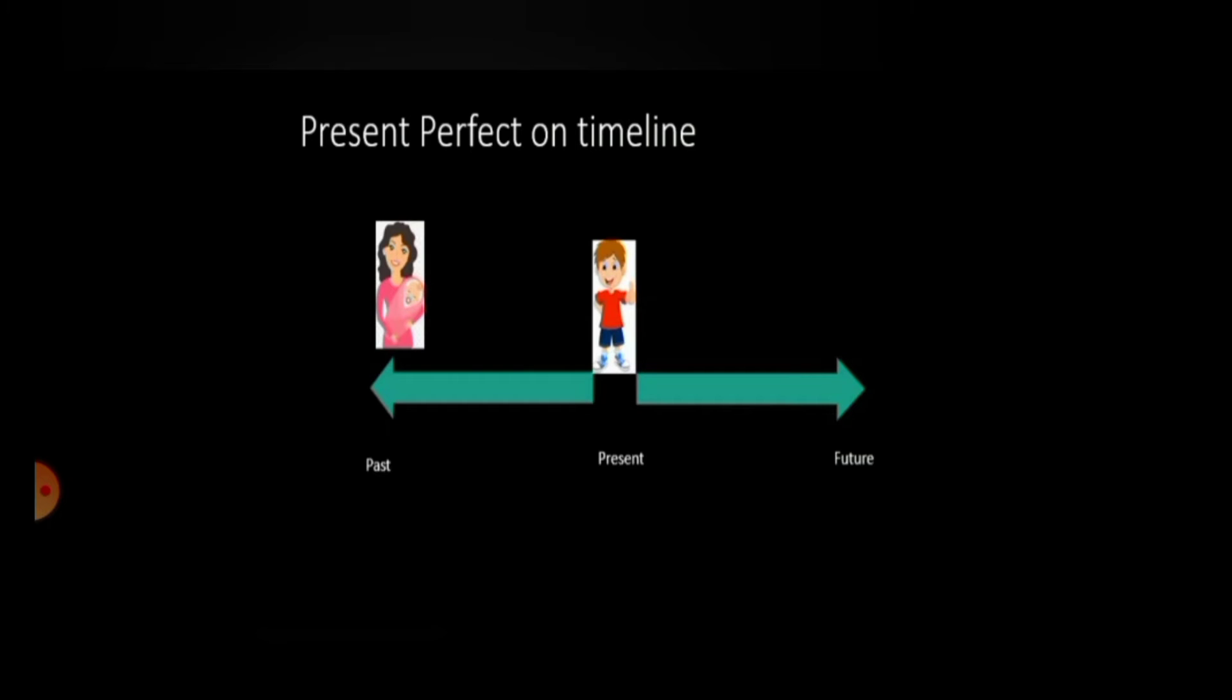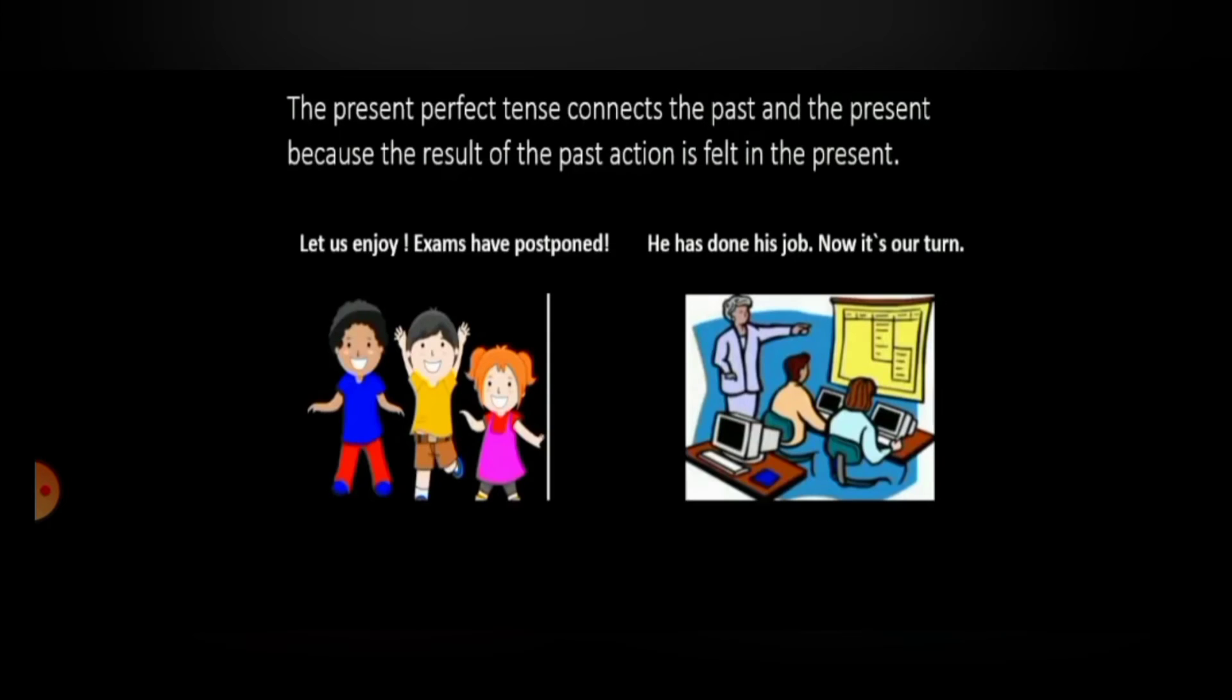Now, there are few more situations where we can use the present perfect tense. The present perfect tense connects the past and the present because the result of the past action is felt in the present. Let us see the examples. Let us enjoy. Exams have postponed. Here, the event of postponing the exam had already taken place. Due to this event, the result is the children want to enjoy now.